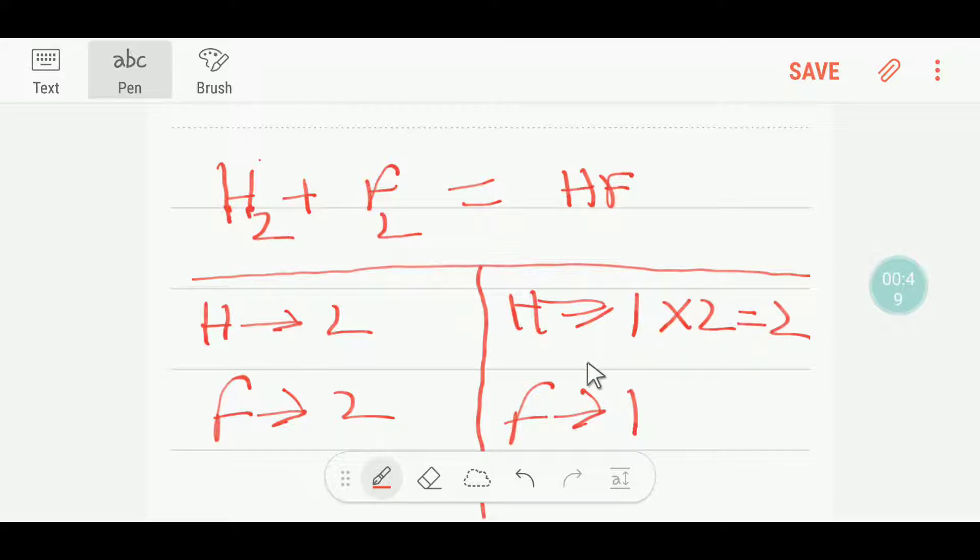If I put here two, this two will come before this hydrogen. If you place here coefficient two, the number of fluorine will change. You are getting two fluorine, so you have to write here two fluorine.